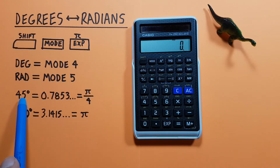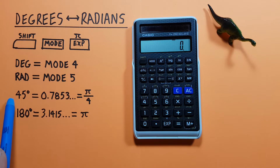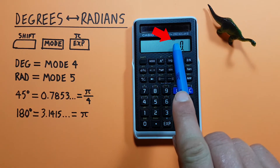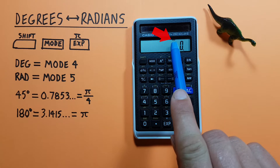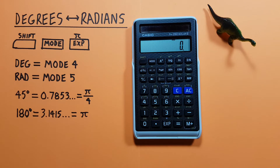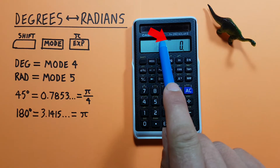Let's say we had 45 degrees and wanted to convert that to radians. The first thing we need to do is set our calculator to the mode that we're entering. Since we have 45 degrees we want to be in degree mode. We can see the mode we're in at the top of our screen. Right now it says RAD for radian mode, so we need to change that to DEG. To do that we press mode 4 for degree mode and we see DEG now at the top of our screen.